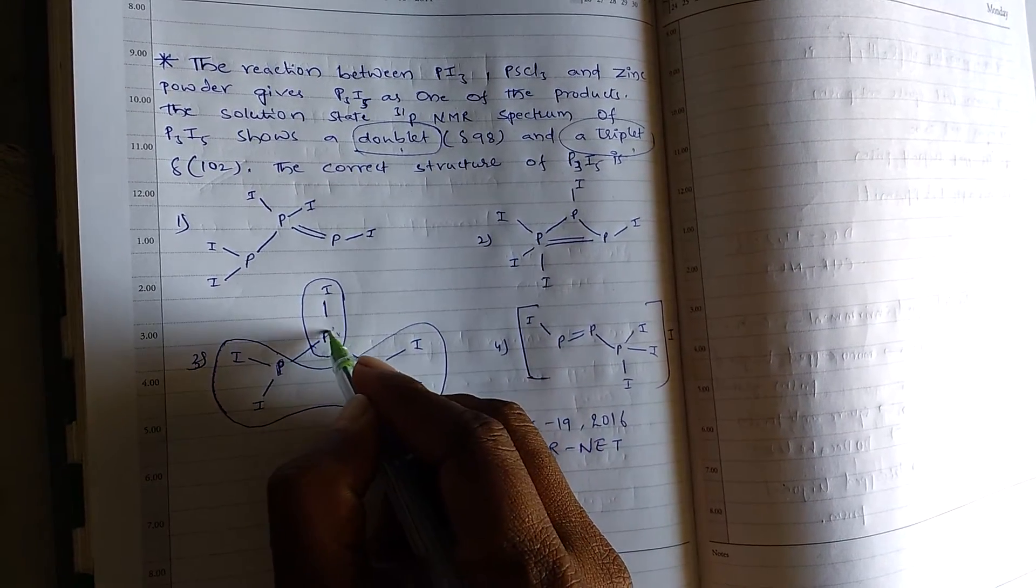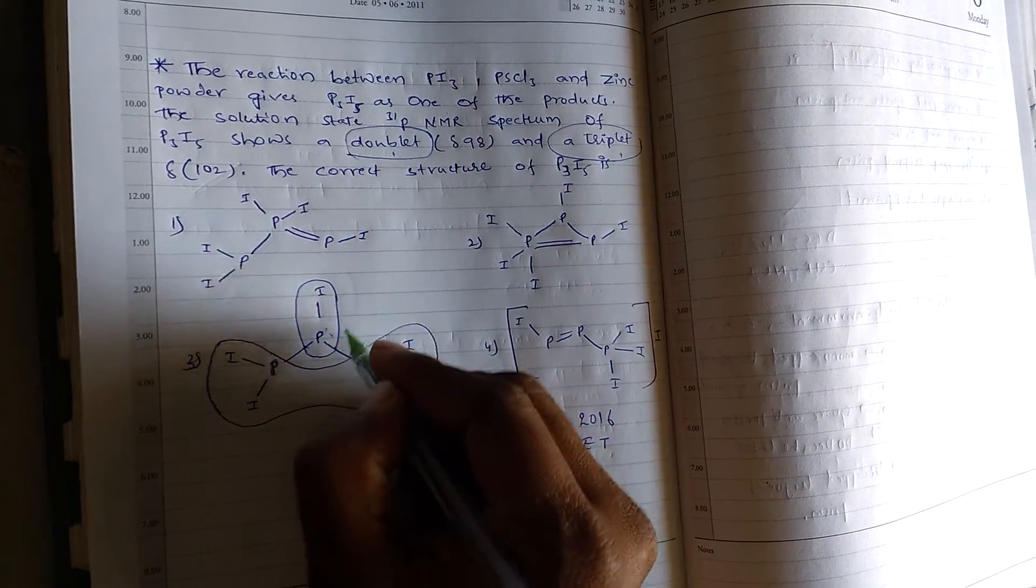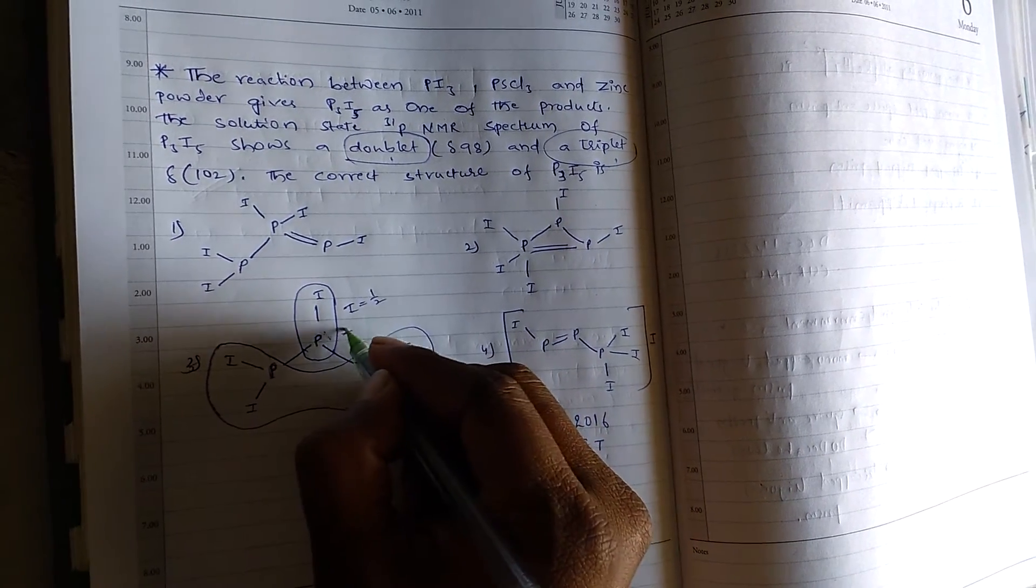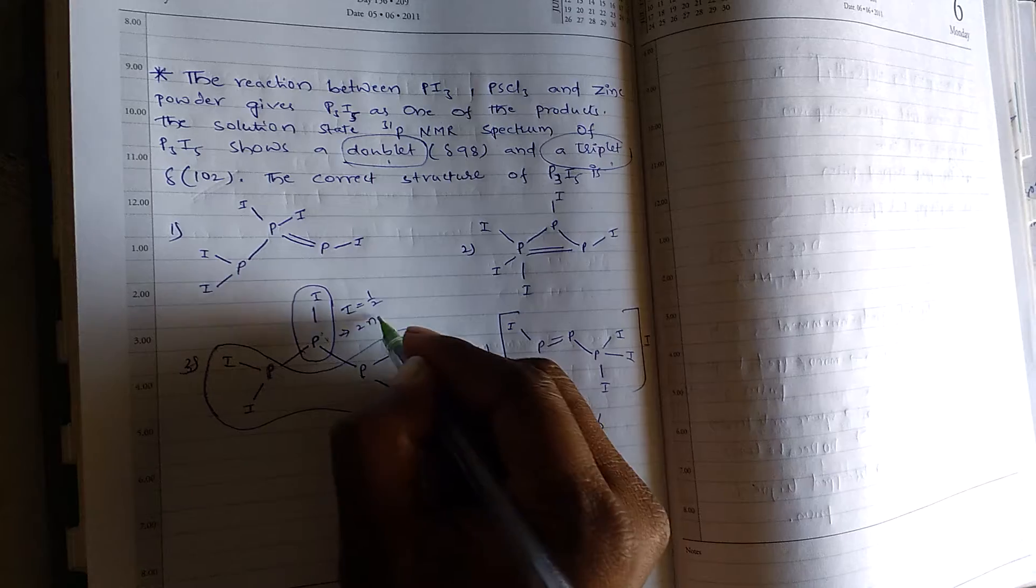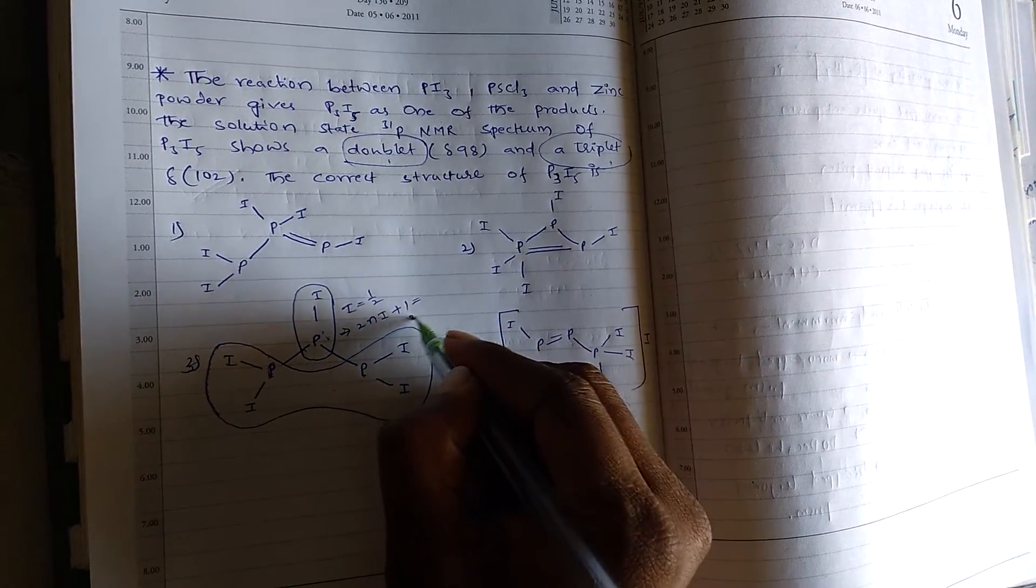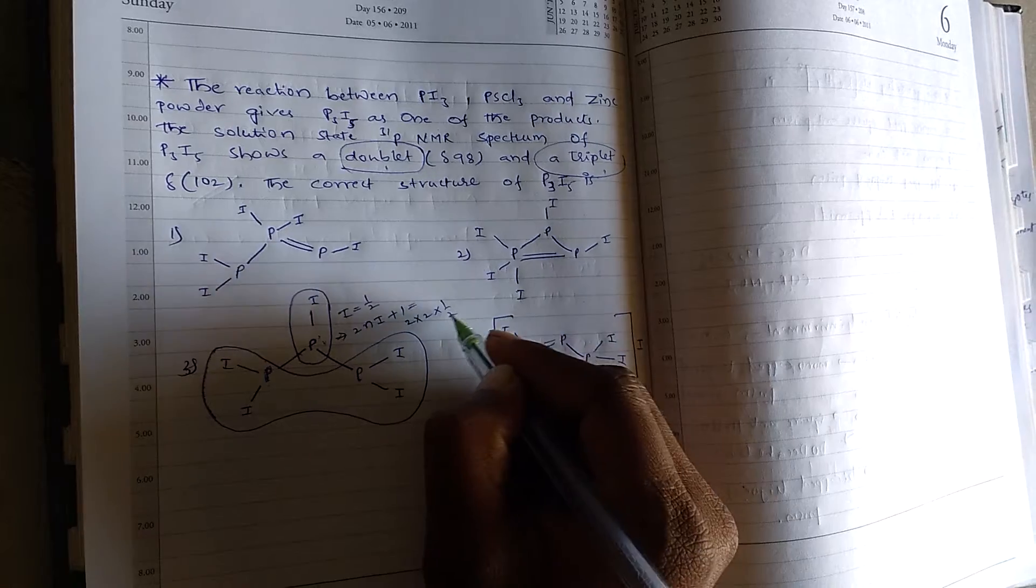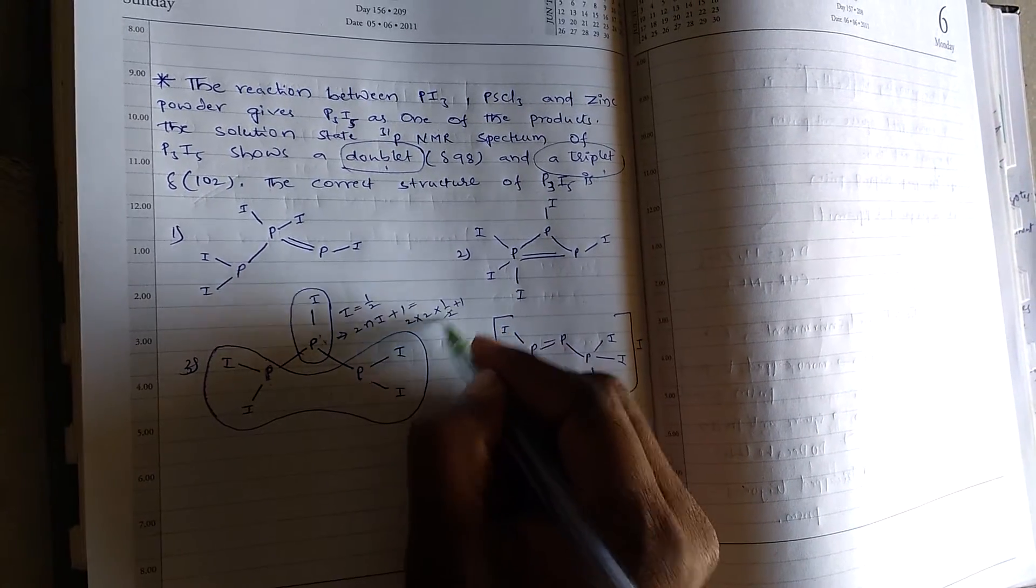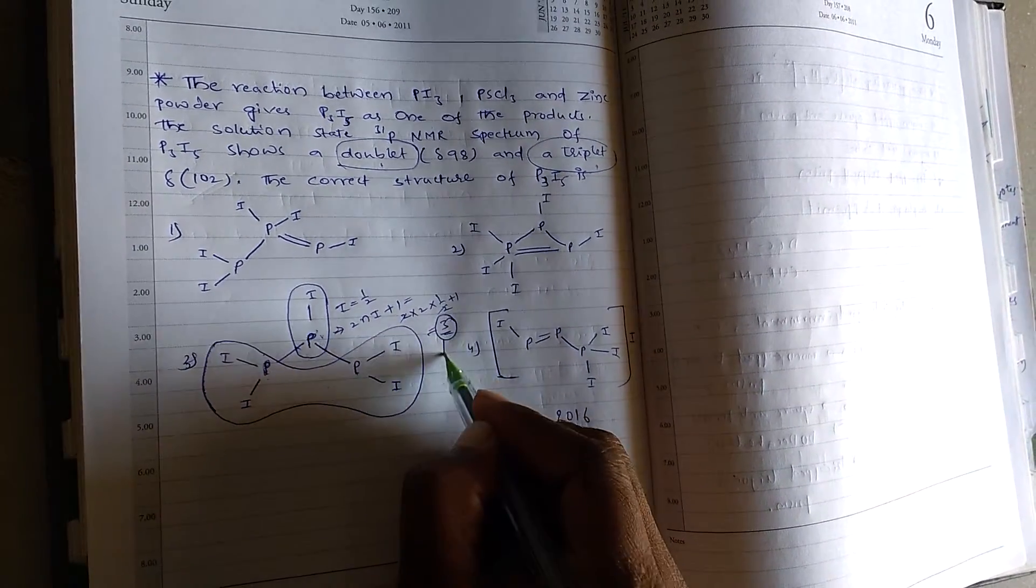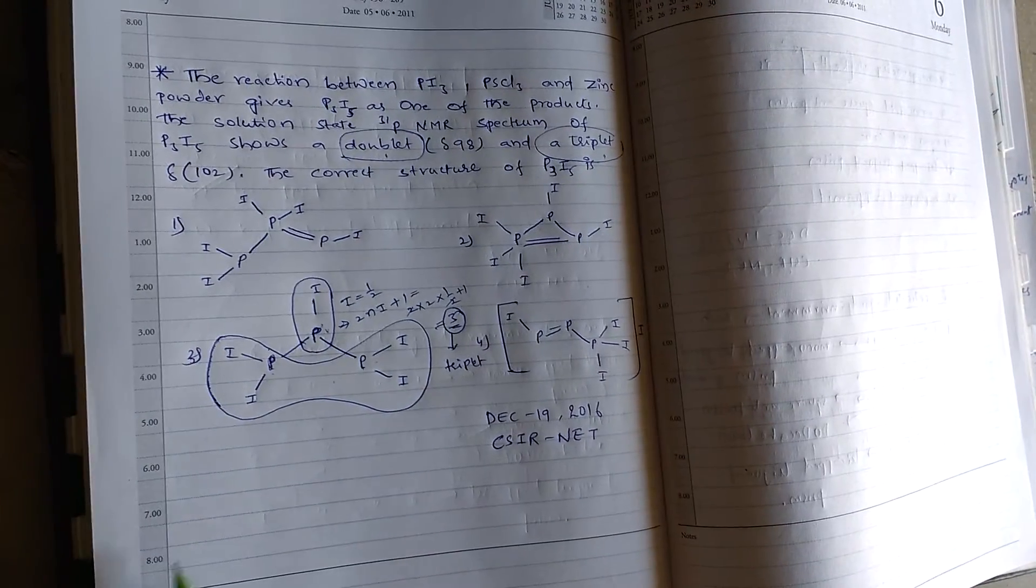That means this phosphorus is in triplet environment. Phosphorus has I is equal to half. And we have the formula 2NI plus 1. If you do 2 into 2 phosphorus, 2 into I is equal to half, plus 1, 2 to cancel and from this we can get 3. That means this phosphorus has triplet environment.